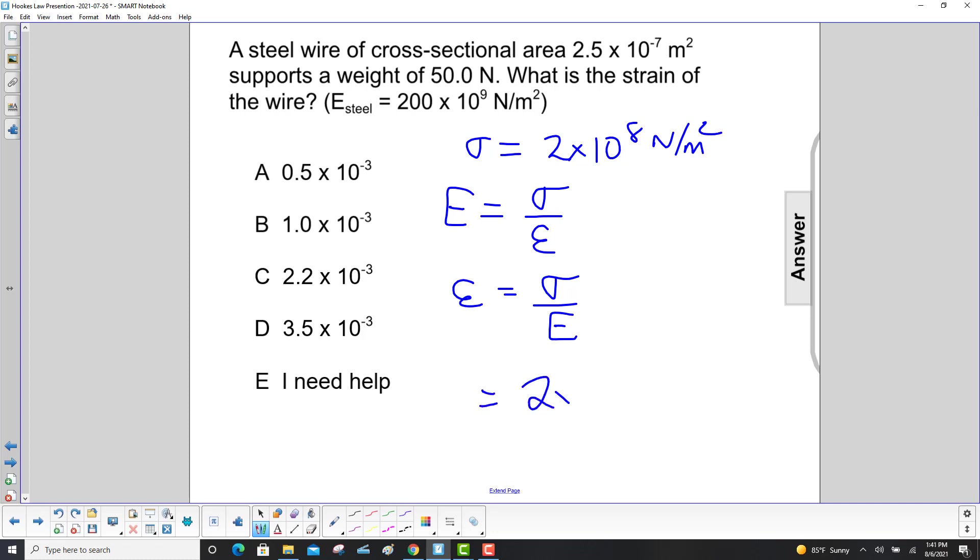So now we have 2 times 10 to the eighth newtons per meter squared, and Young's modulus is 200 times 10 to the ninth newtons per meter squared.